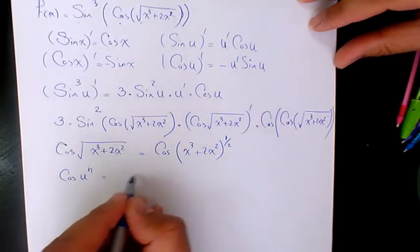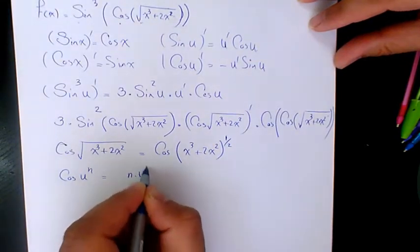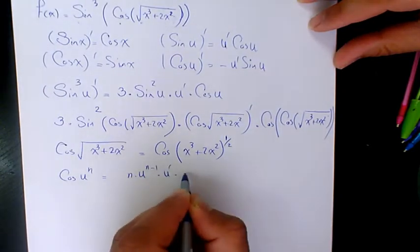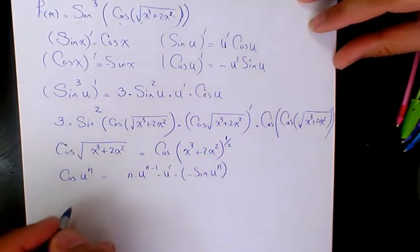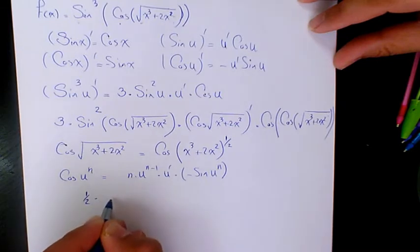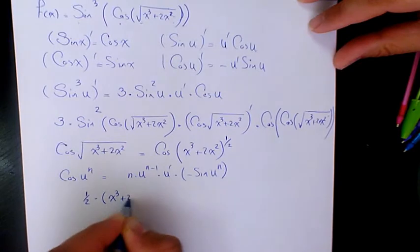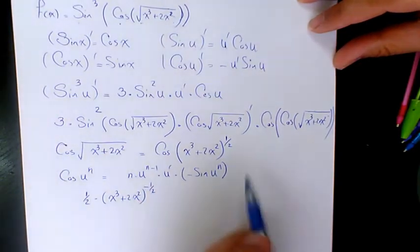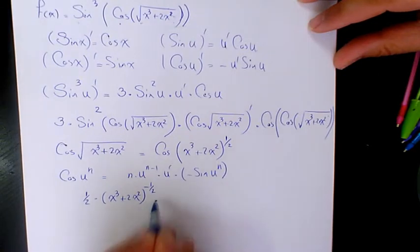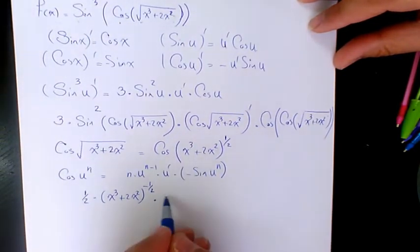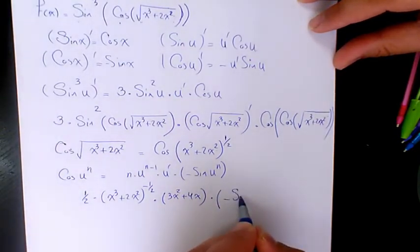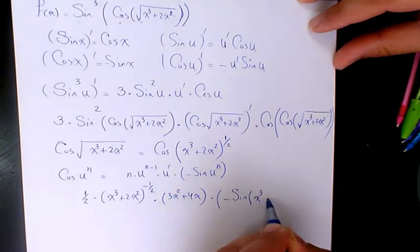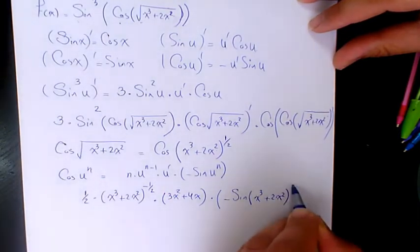...n times u to the power of n minus one, times u prime, times negative sine of u to the power of n. So in this case it's going to be one over two times (x cubed plus two x squared) to the power of negative one over two — because one over two minus one is negative one over two — times the derivative of this part, which is three x squared plus four x, times negative sine of (x cubed plus two x squared) to the power of one over two.